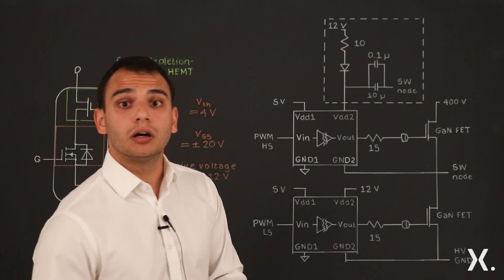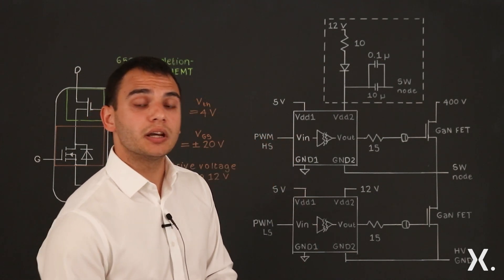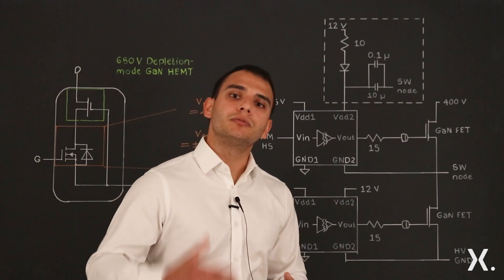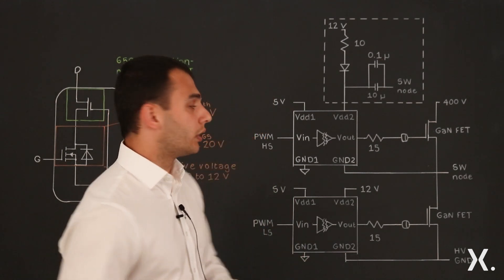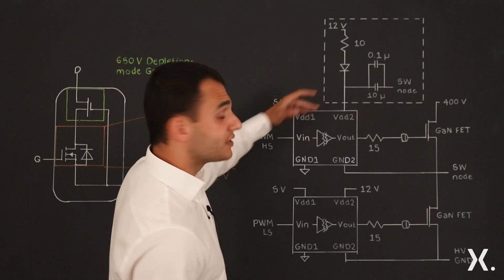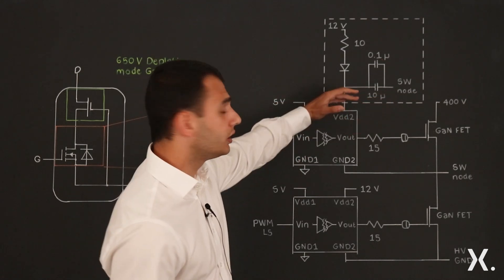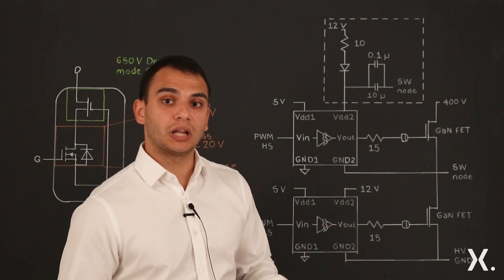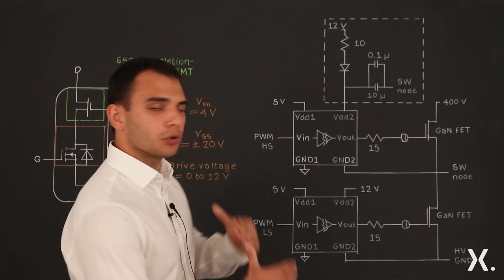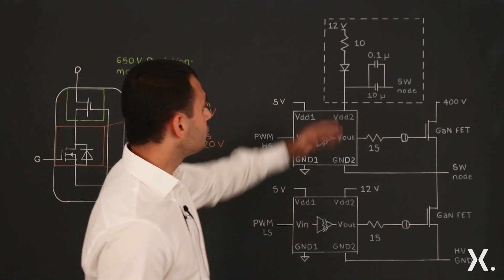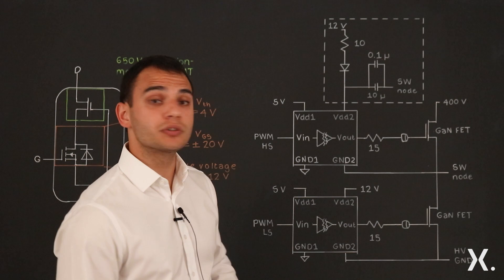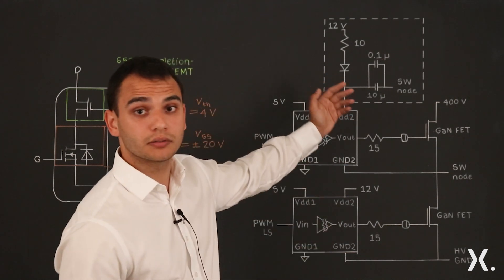When you look at others on the market, you can see that in their case you have to have very tight regulation, where you have to have let's say six or seven volts on here to switch it on reliably and you cannot have any variation. In our case, you have more flexibility and you can use a very cost-effective circuit like this one here.